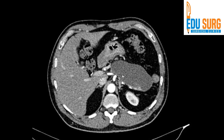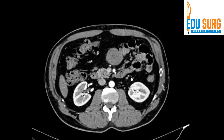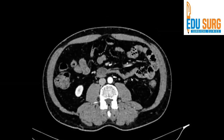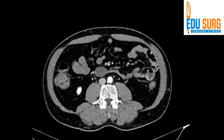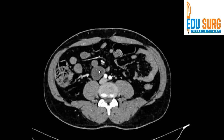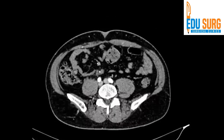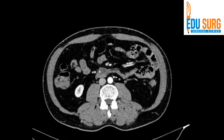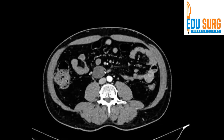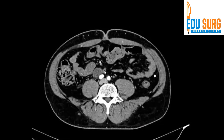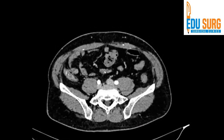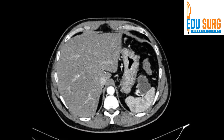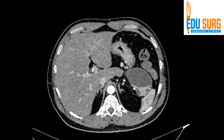If you have identified the collection, that is good, but there are some important additional points to identify. There is a separate small collection in this area — that is something that should not be missed, because if this patient is planned for surgery, this collection may also need to be tackled. That is one point that is often missed in a scan like this.